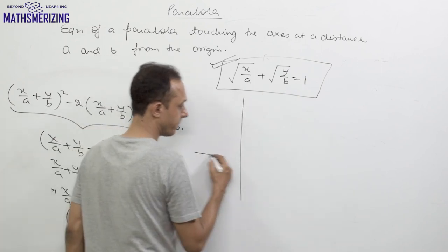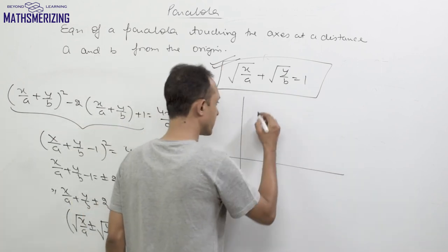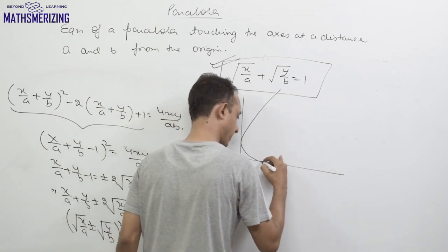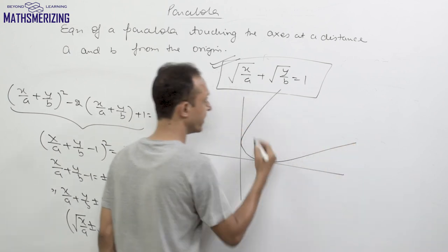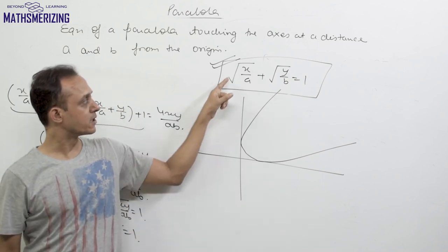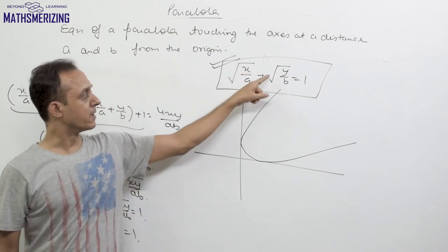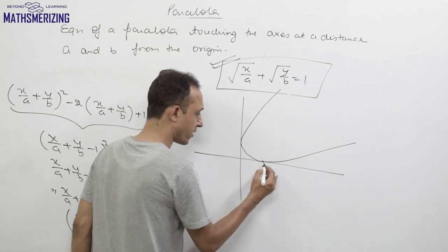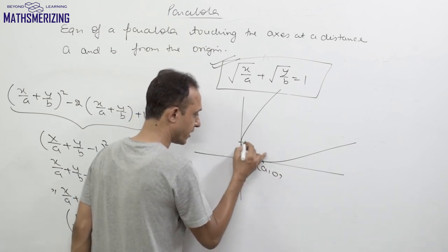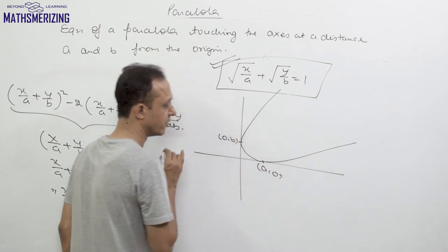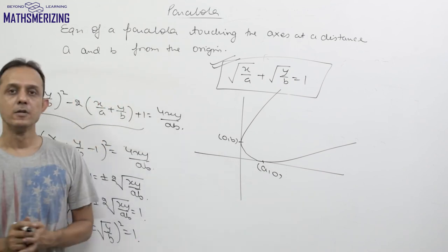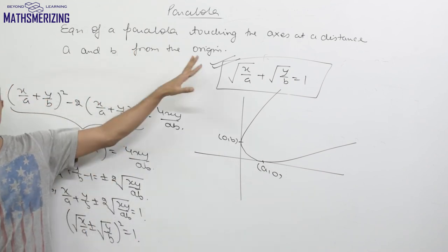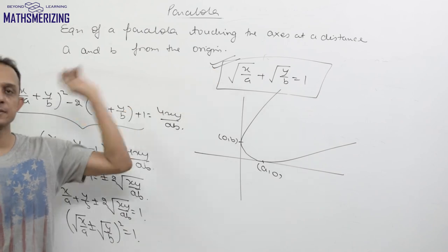So if we have this parabola which touches both axes, we can simply write the equation as √(x/a) + √(y/b) = 1, where the point of contact is (a, 0) and the point of contact is (0, b). This is how we write the equation of a parabola touching both axes.